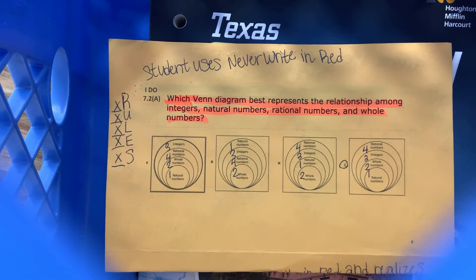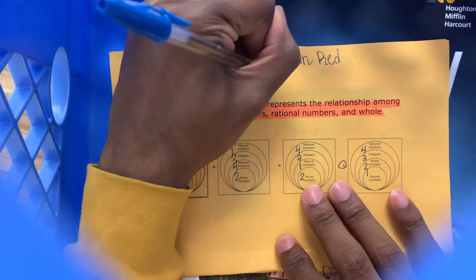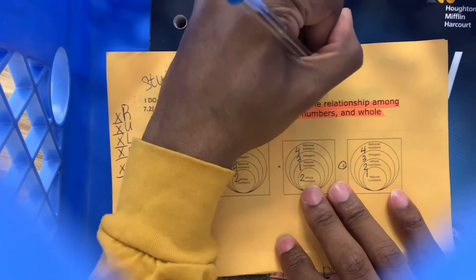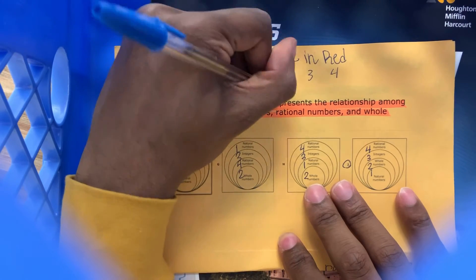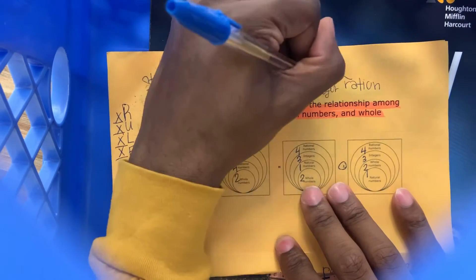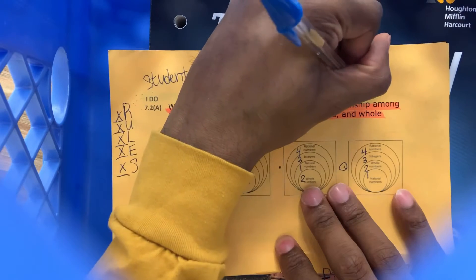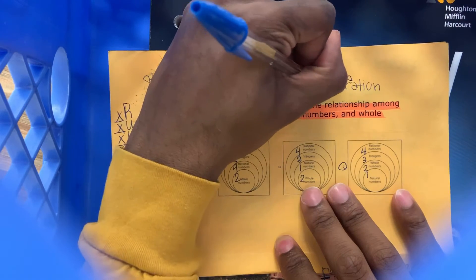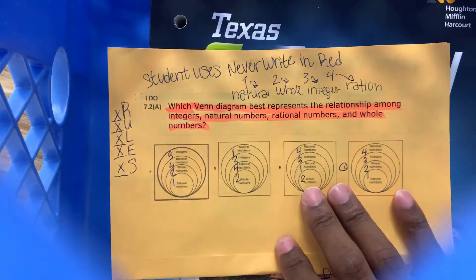So what we know is — I know: Never Write In Red. That's the sequence. Never Write In Red represents natural, whole, integer, rational. Making a little arrow here to show the ordering.